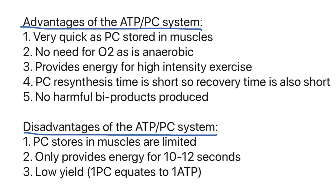You might be thinking — why don't we just keep using this system? The disadvantages are that PC stores in the muscles are limited, so you can't go for more than around 10 to 12 seconds. It also has a very low ATP yield, as one phosphocreatine equates to only one ATP being resynthesized. The most effective way to resynthesize ATP is the aerobic energy system, but that's slow — so the ATP-PC system is good for quick energy. We'll also look at how all the energy systems interplay in a later video.